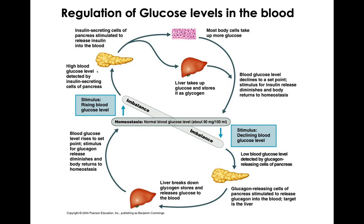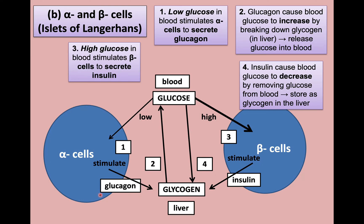To recap: in the pancreas we have the islets of Langerhans. In the islets of Langerhans we have the alpha and beta cells. The alpha cells are responsible for the secretion of glucagon, while the beta cells are responsible for the secretion of insulin. Insulin and glucagon are responsible for controlling the concentration of glucose levels in the blood.